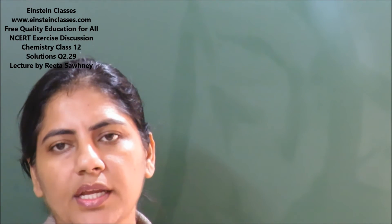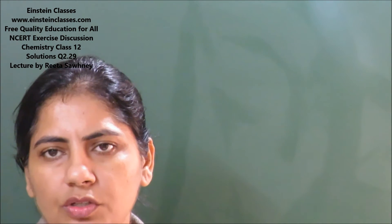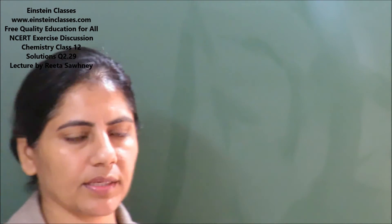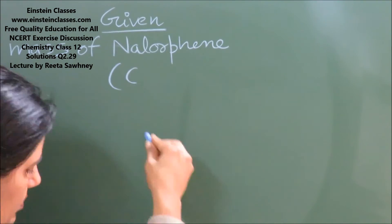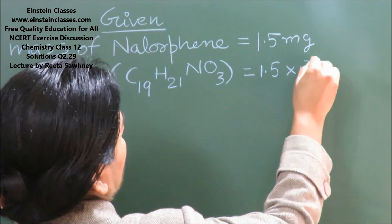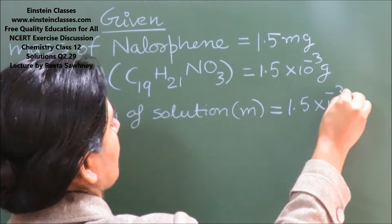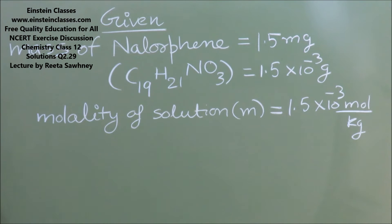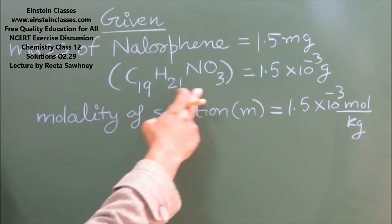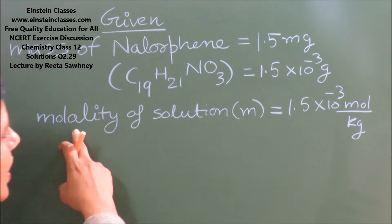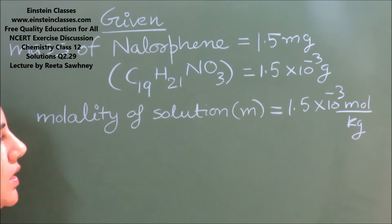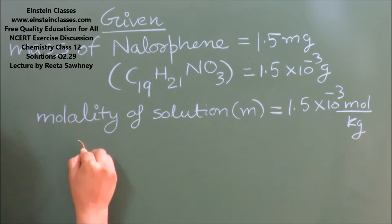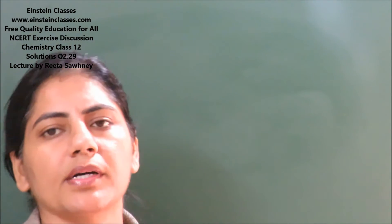We are given the mass of Nalorphine and the molality of the solution, and we need to find out the mass of the solution. The mass of Nalorphine is 1.5×10⁻³ grams. The molecular formula for Nalorphine is given, and the molality of the solution M is 1.5×10⁻³ mol per kg. Our aim is to find out the mass of the solution.